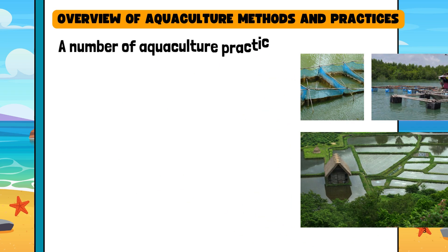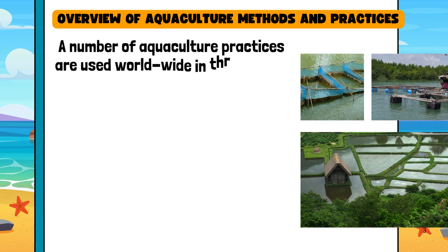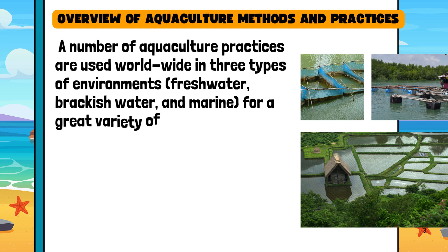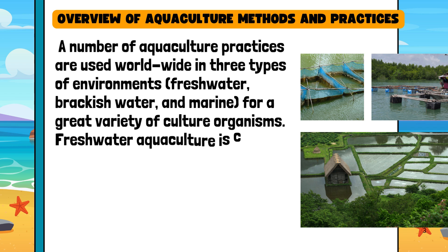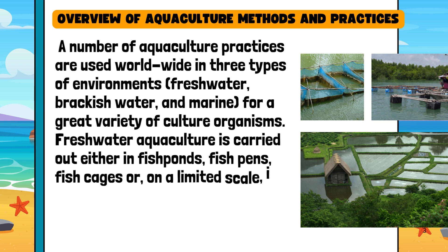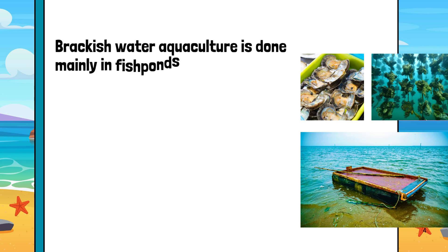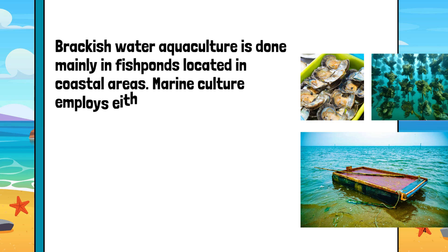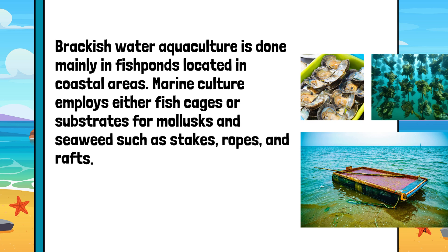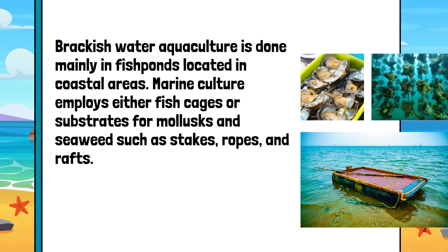Overview of Aquaculture Methods and Practices. A number of aquaculture practices are used worldwide in three types of environments: freshwater, brackish water, and marine, for a great variety of culture organisms. Freshwater aquaculture is carried out either in fish ponds, fish pens, fish cages, or, on a limited scale, in rice paddies. Brackish water aquaculture is done mainly in fish ponds located in coastal areas. Marine culture employs either fish cages or substrates for mollusks and seaweeds such as stakes, ropes, and rafts.